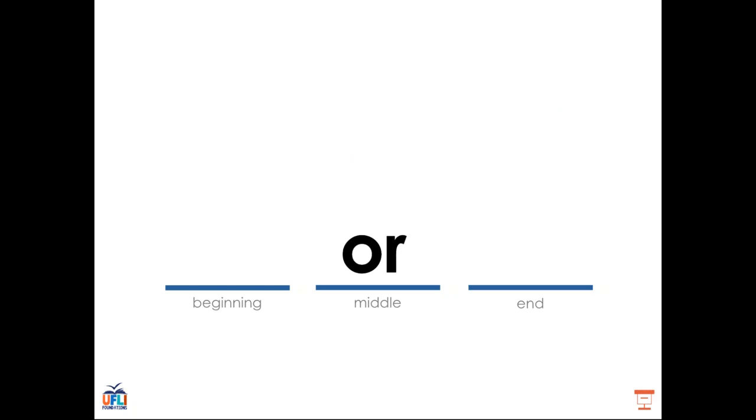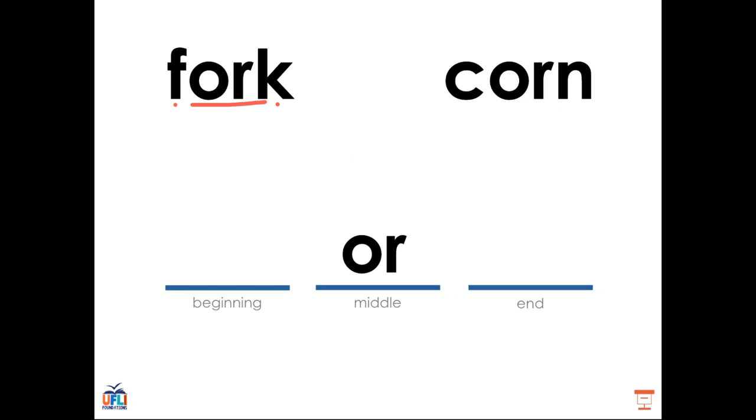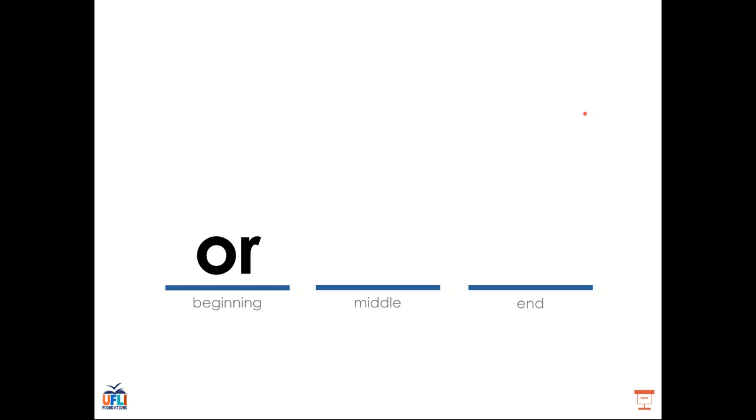The OR spelling pattern can appear in the middle of words like in fork or corn. We also learned that the OR spelling pattern can appear at the beginning of words like in orb. Finally, we learned that in special instances OR can also appear at the end of words like in for.